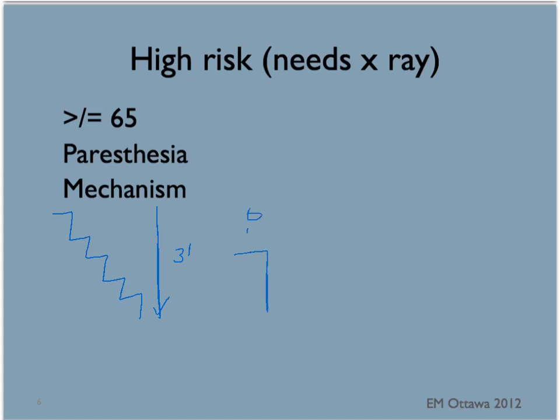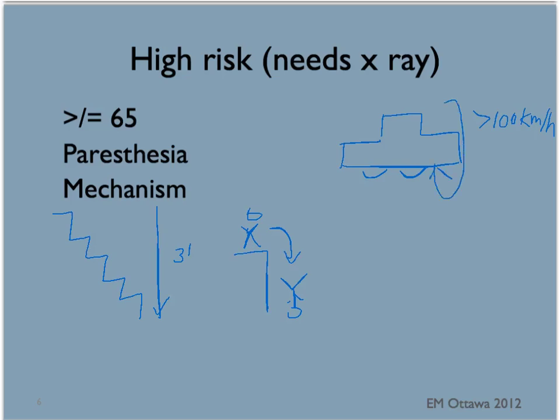High risk mechanisms also include axial loading such as diving, high speed motor vehicle collision over 100 km per hour, those involving rollover or ejection, and bicycle or motorized recreational vehicles such as all-terrain vehicles. Patients with any high risk factors need to have at least an x-ray of their cervical spine.